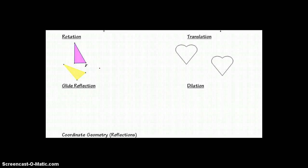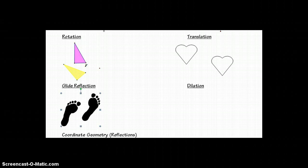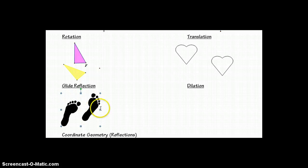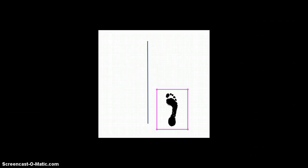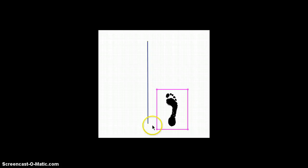The best example of a glide reflection would be a set of footprints. I'm going to show you why this is called a glide reflection. A glide reflection is a translation followed by a reflection—we slide the object and then reflect it. We start with this footprint right here.